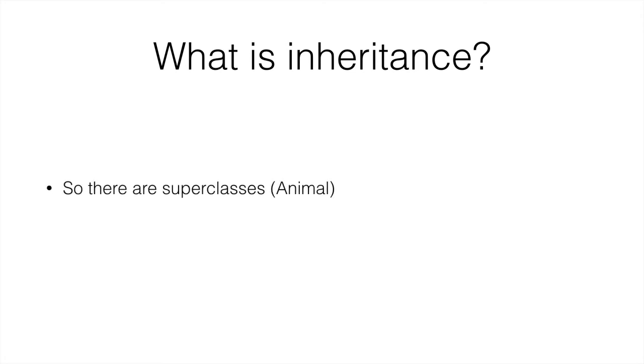So there are superclasses — which in this case is animal — and there are subclasses, which we have three of: dog, cat and horse.